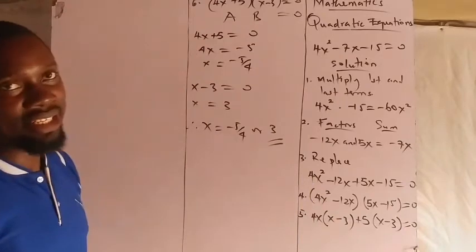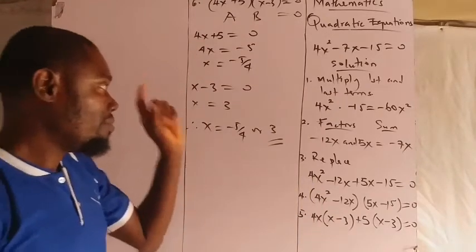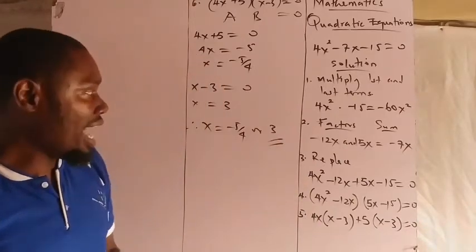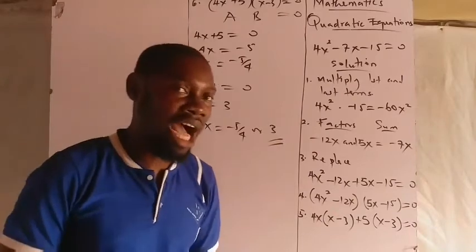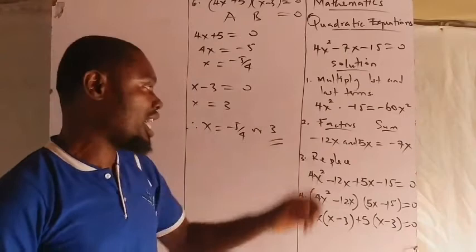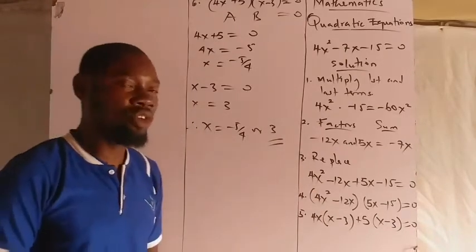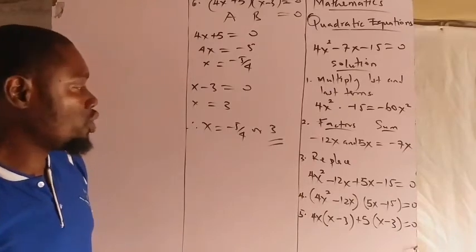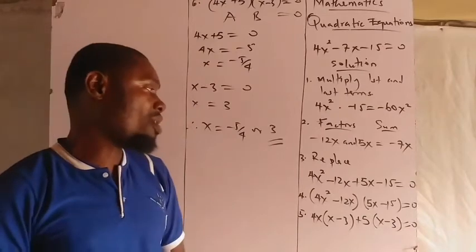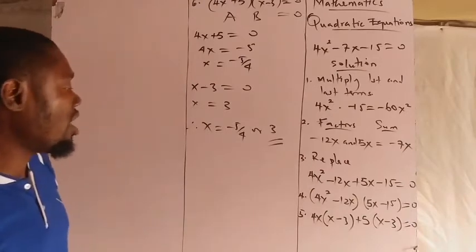So those of you who have not solved the problem, these are your answers. Always follow the steps: multiply the first and the last term, get your results, find the factors of that result such that if you add up those two factors you have the middle term. If you've gotten such factors, then replace the middle term by the two factors you've gotten. Then group them, put them in groups of two.